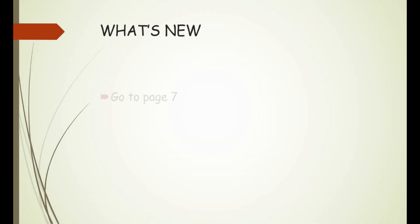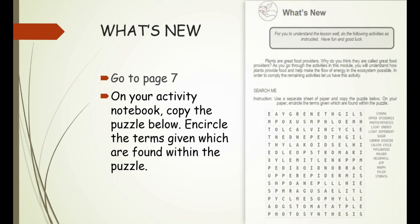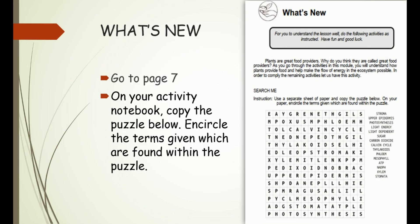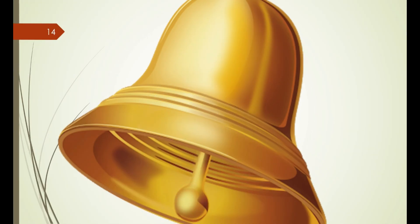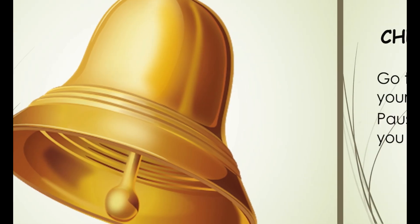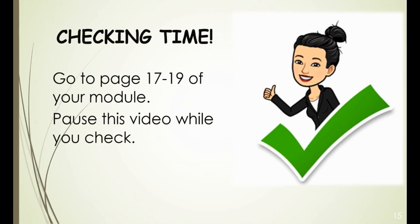Are you ready for a challenge? Go to page 7, "What's New." On your activity notebook, copy the puzzle below and circle the terms given. Let's go! Were you able to answer the word search? Great, let's see how you did. Go to pages 17 to 19 of your module and pause this video while you check your work. Did you get a perfect score? Awesome! Almost perfect? That's alright — let's do better next time.